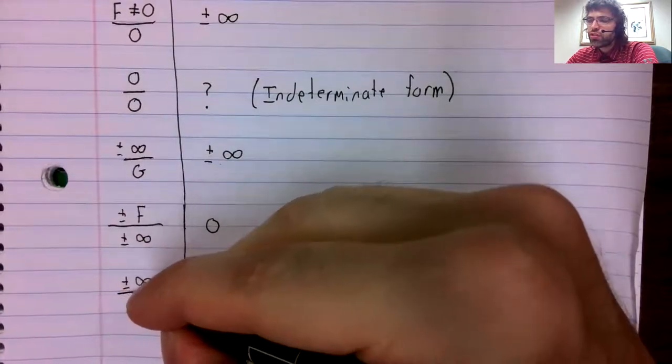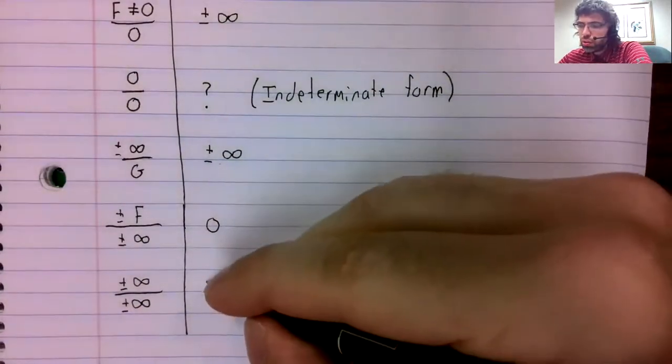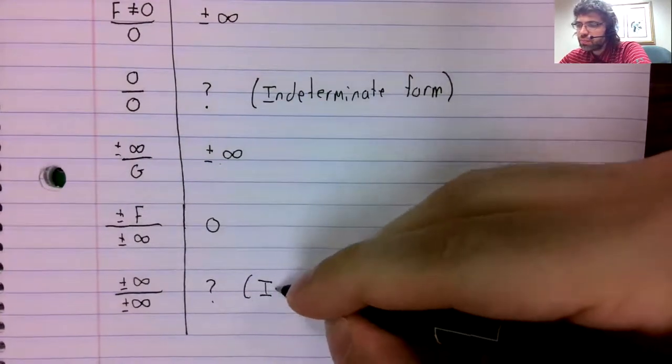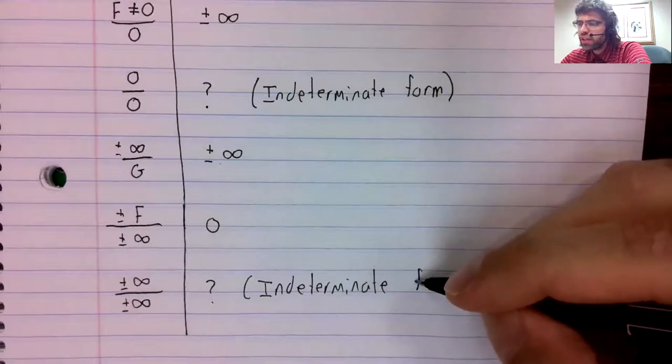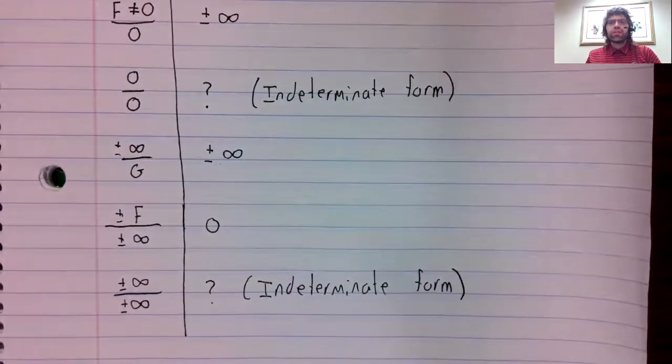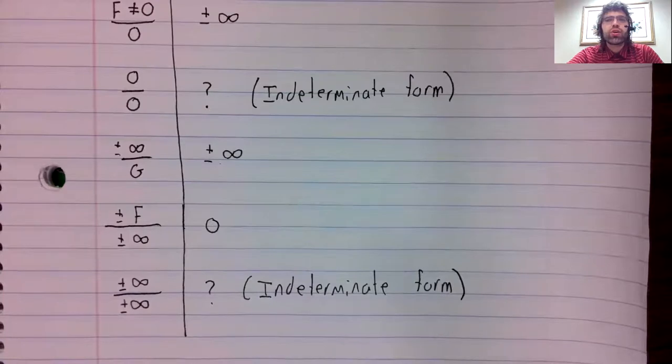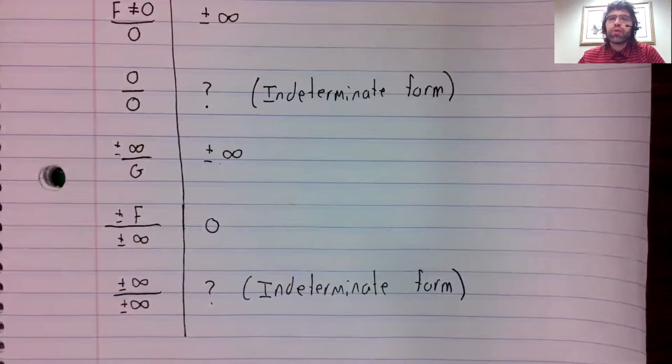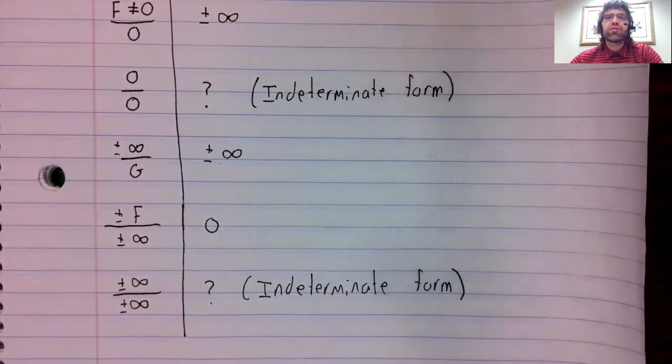If the numerator is going to infinity and the denominator is going to infinity, that's another indeterminate form. We're not going to do a lot with these indeterminate forms for now. We'll come back to this later in the calculus sequence, in calculus two, when we'll learn a powerful trick for investigating these indeterminate forms.